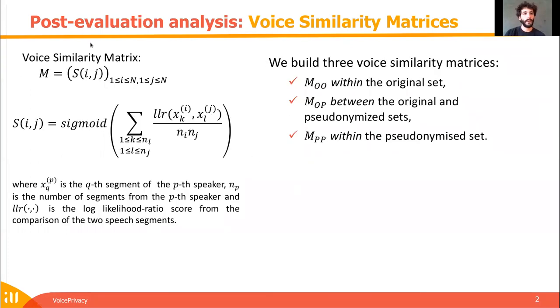Voice similarity matrices are matrices where an element is a similarity between two speakers, and the similarity is a sigmoid applied on an average score between every segment from a speaker and every segment from another speaker.